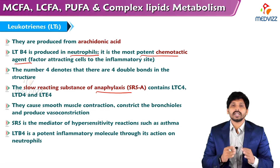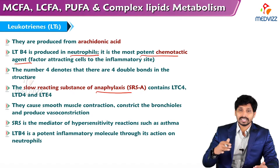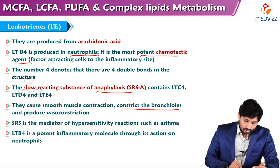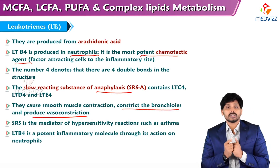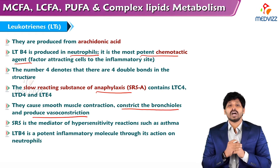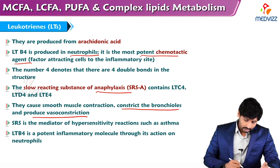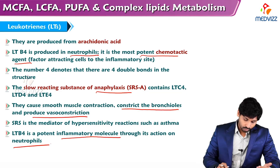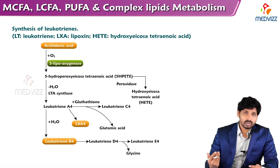— the slow reacting substance of anaphylaxis contains LTC4, LTD4, and LTE4. These are subtypes of leukotrienes; they cause smooth muscle contraction, constrict the bronchioles, and produce vasoconstriction. Slow reacting substance is the mediator of hypersensitivity reactions such as asthma. Leukotriene B4 is a potent inflammatory molecule through its action on neutrophils.